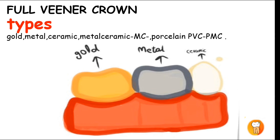The materials used for full veneer crowns include gold, metal ceramic (MC), and porcelain veneer crown (PVC) — also called porcelain fused to metal (PFM). The crown may be entirely made of porcelain or a combination of porcelain and metal. Similarly, ceramic crowns may be entirely ceramic or a combination of metal and ceramic.